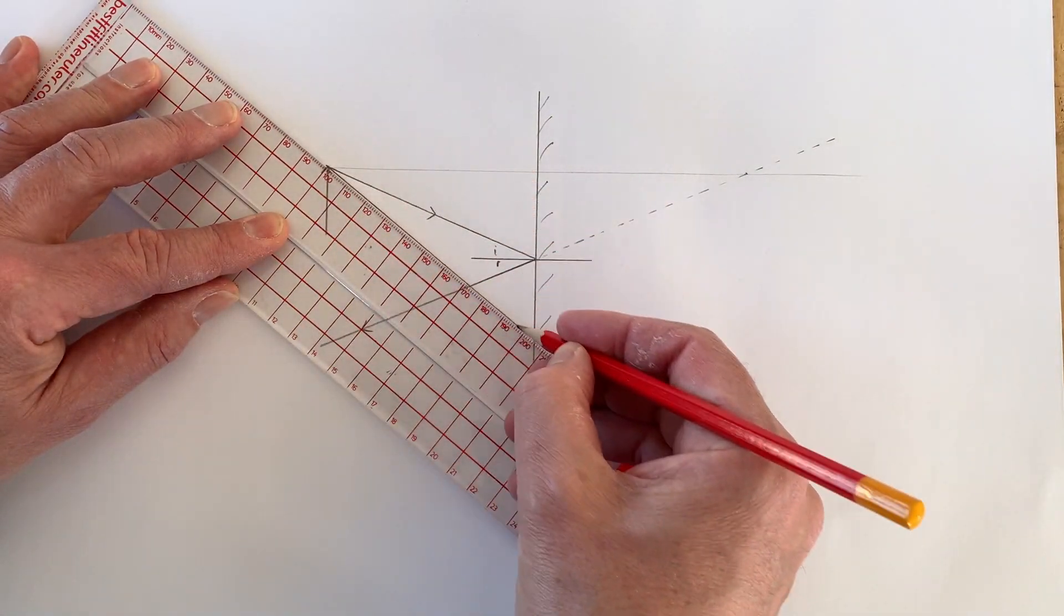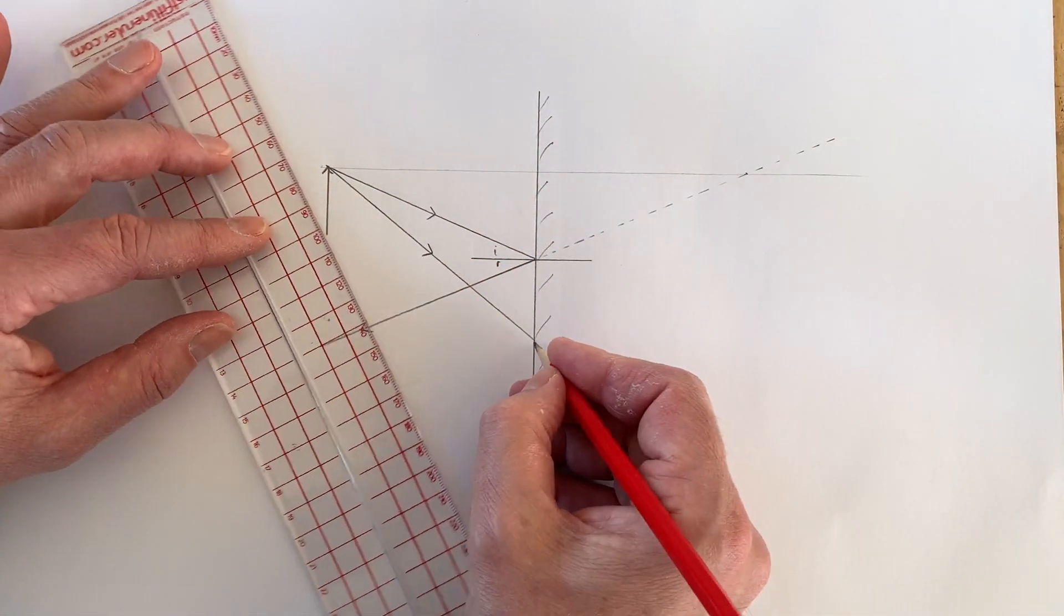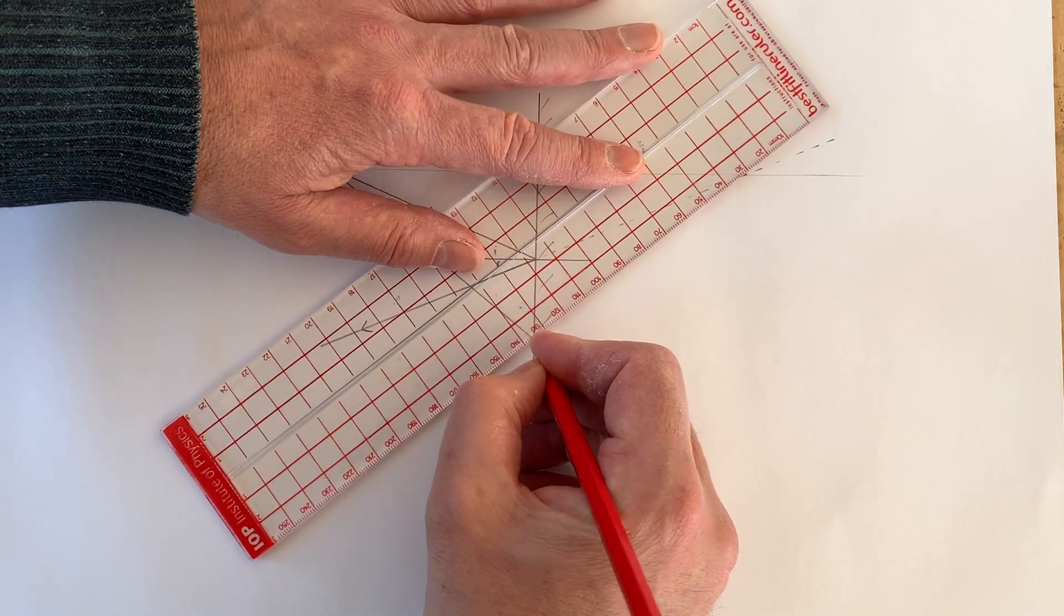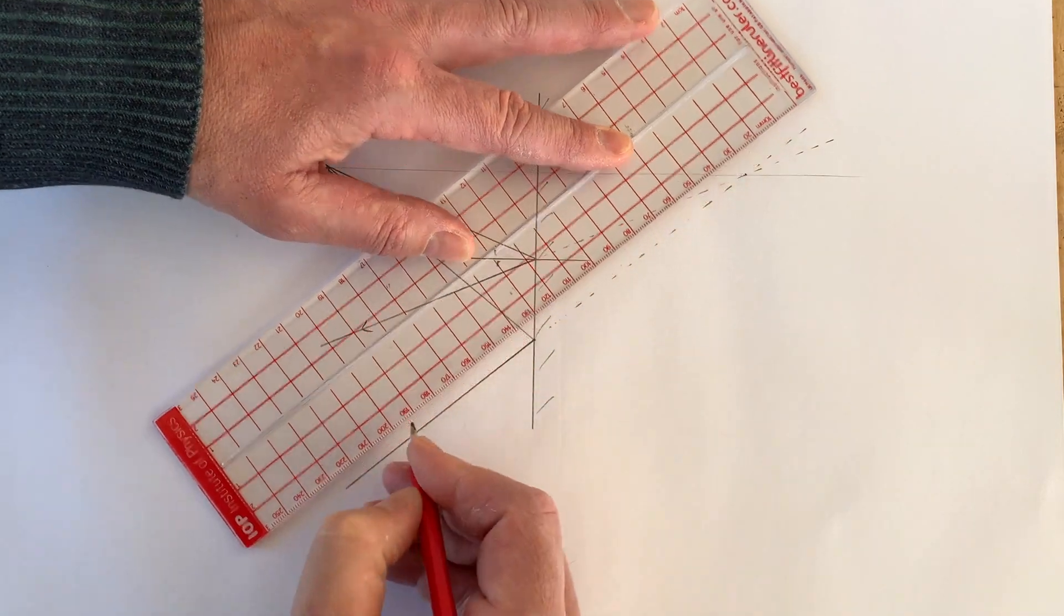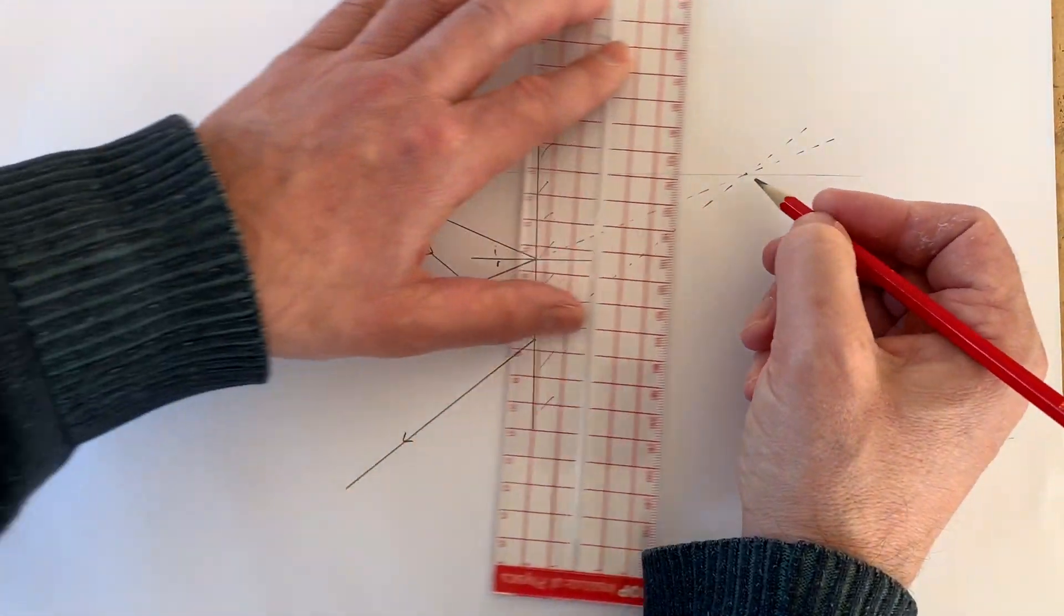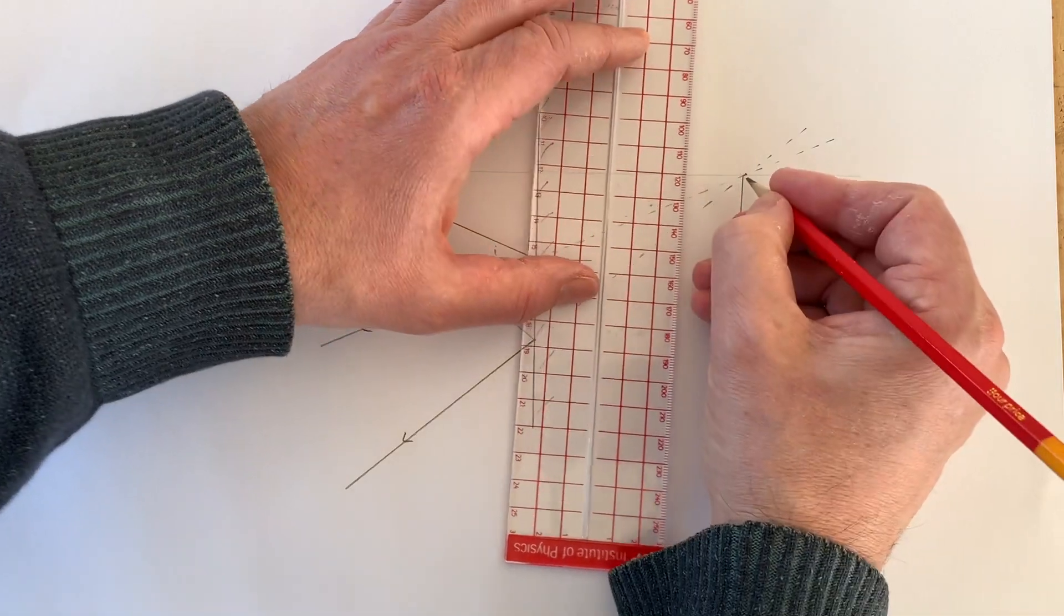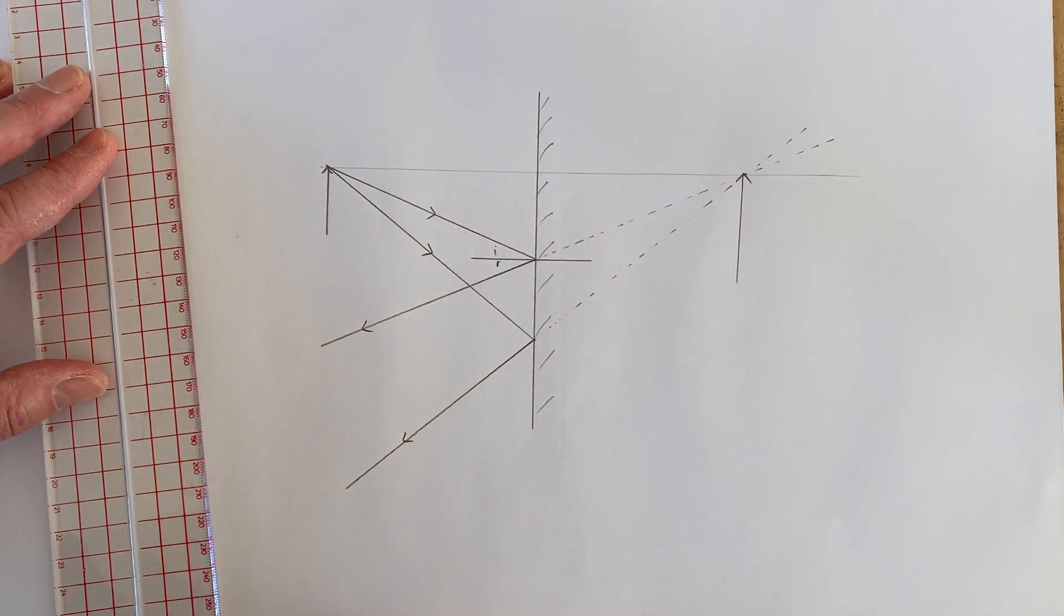And I can now draw a second ray coming down to the mirror. Once again, I can line that ray up with where I know the image is going to be, draw my virtual ray, and then draw my real, reflected ray. And that is a very quick way of replicating the diagram that I drew earlier.